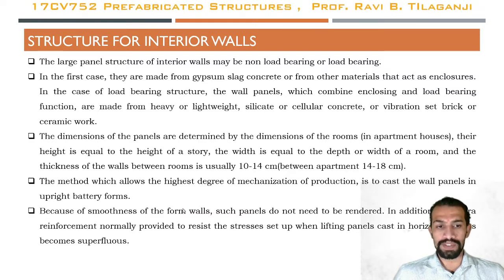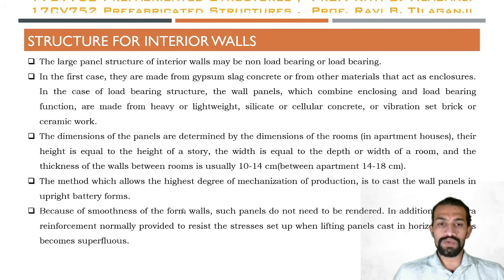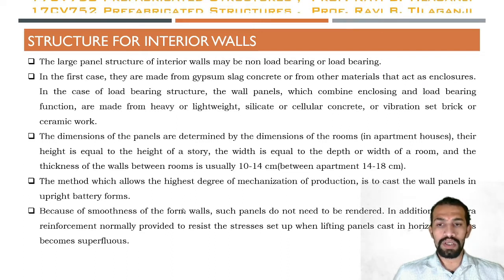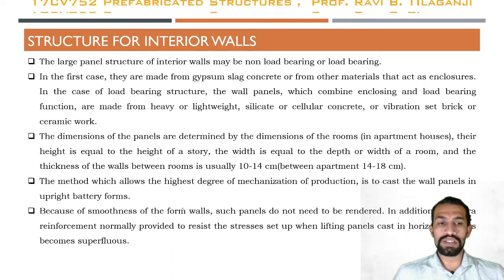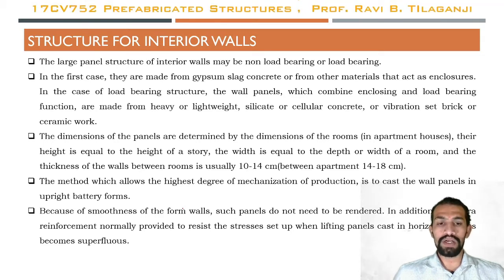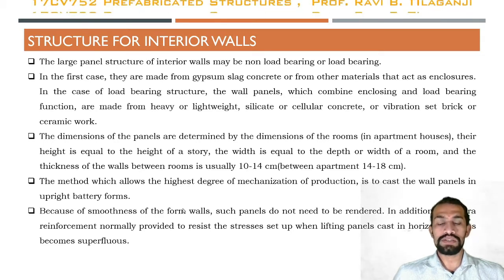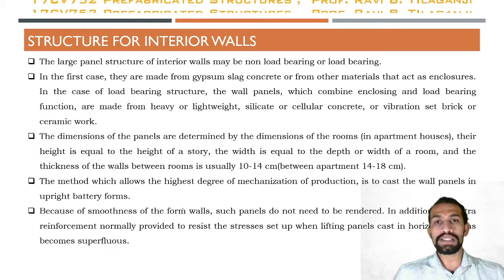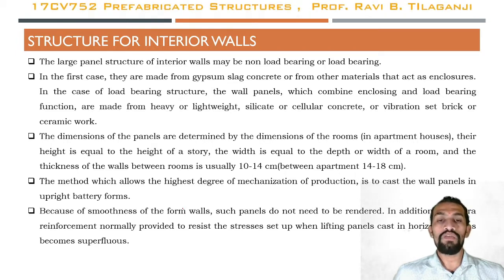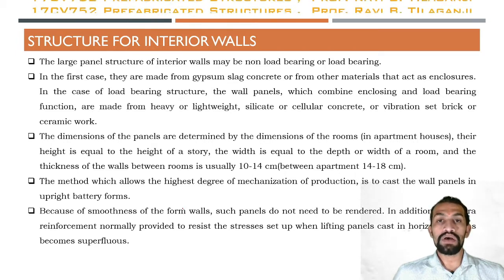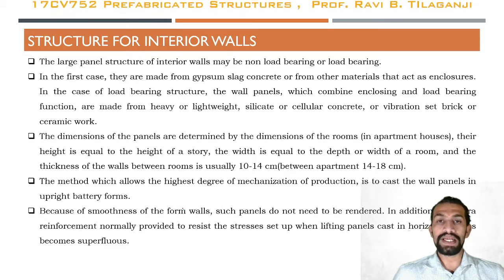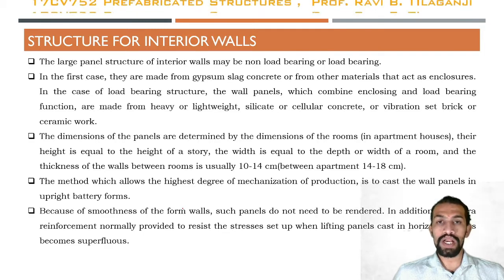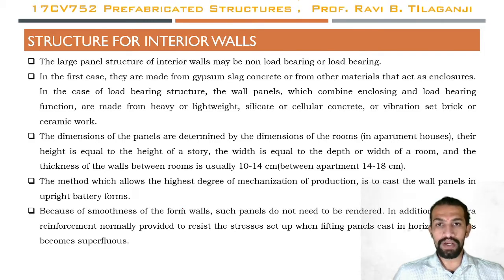The highest degree of mechanized production is achieved by casting wall panels in upright battery forms. Because of the smoothness of the form walls, such panels do not need to be rendered. Additionally, the extra reinforcement normally provided to resist stresses during lifting and handling of panels cast in horizontal forms becomes superfluous, achieving economy in construction and manufacturing of prefabricated walls.